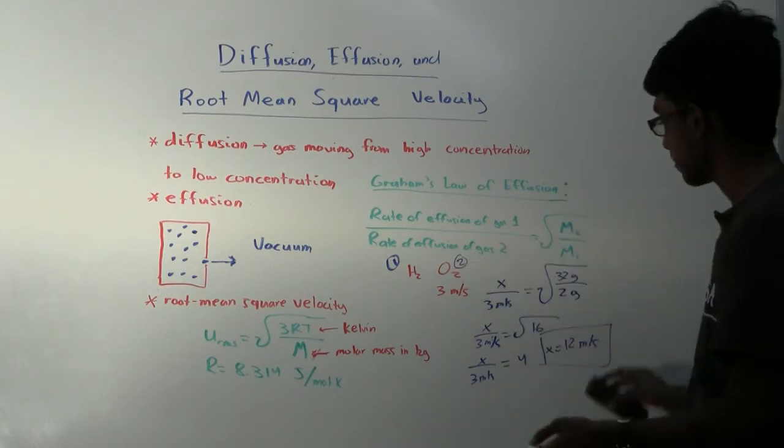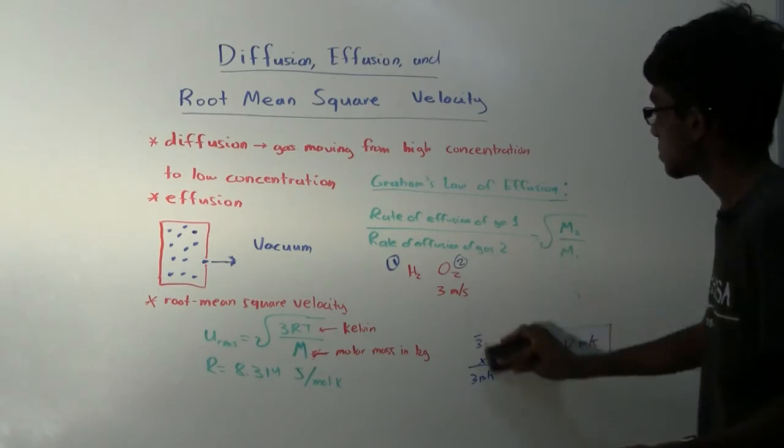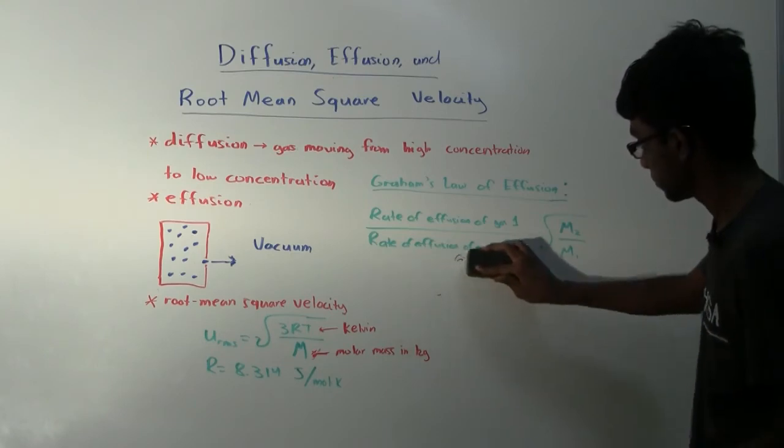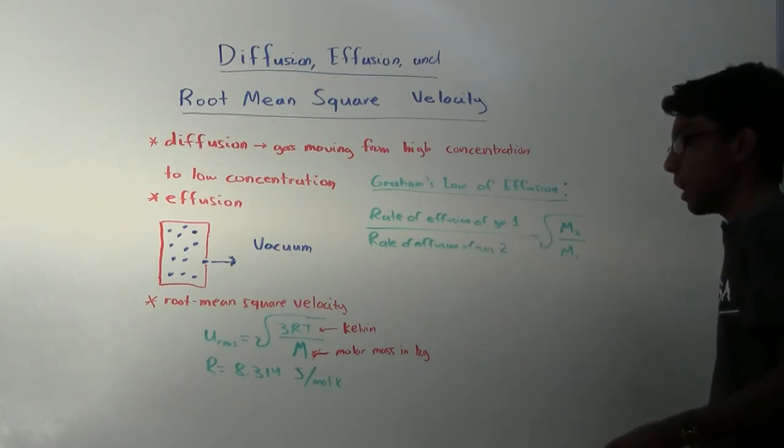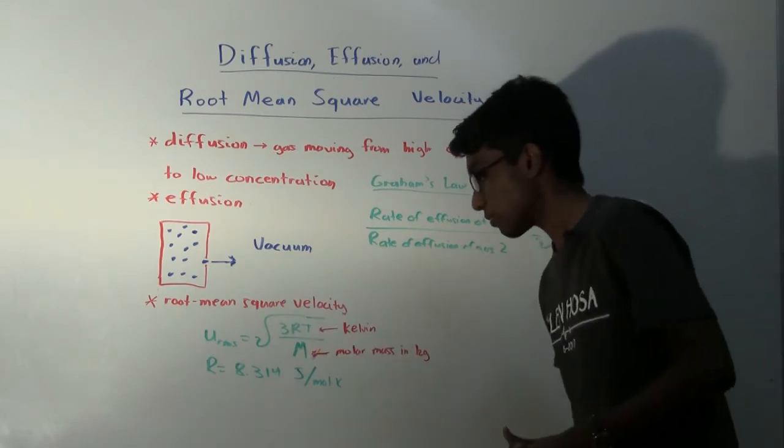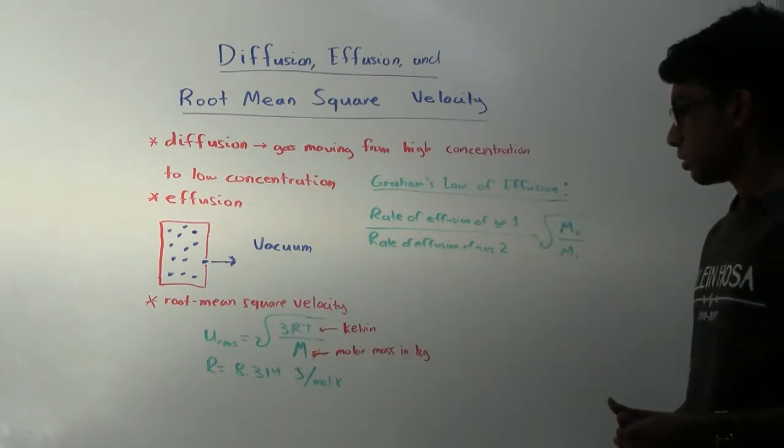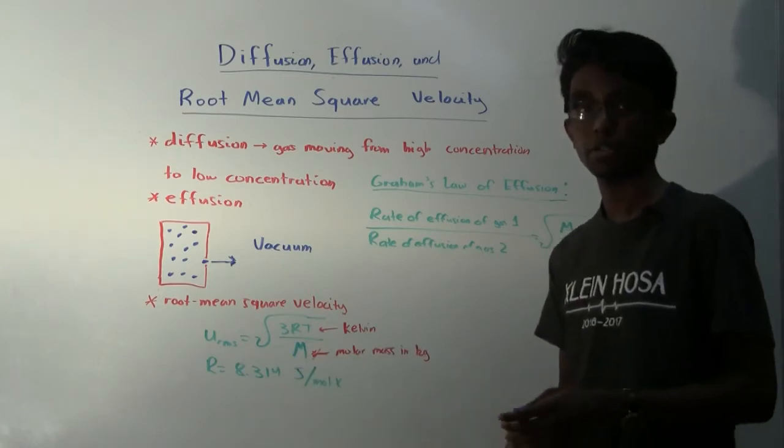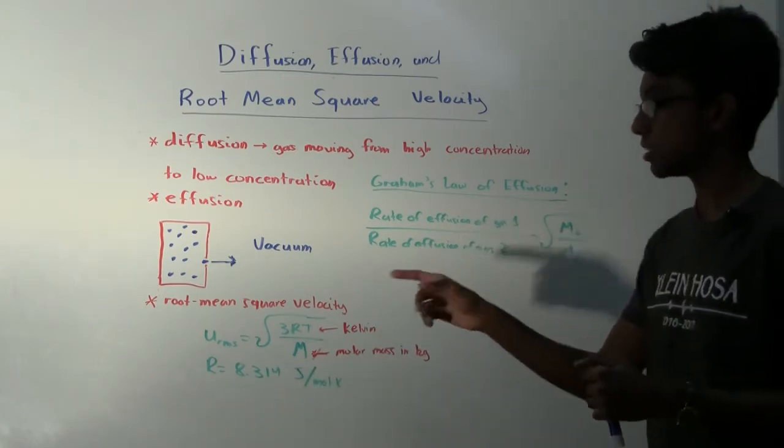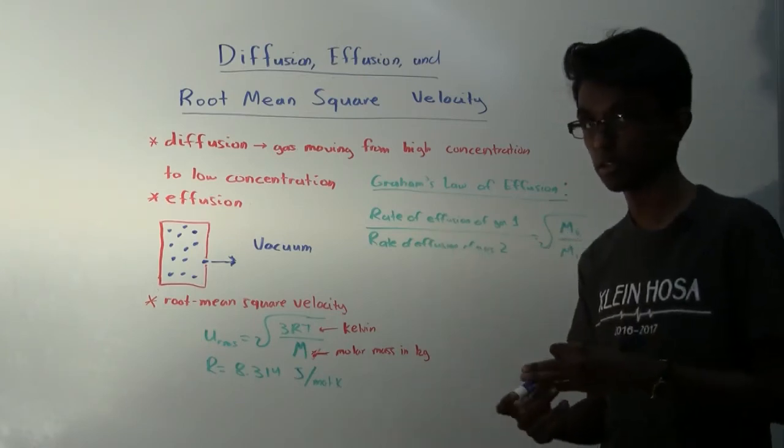So this should be 12 meters per second. That's how you use Graham's law of effusion. And then the last property we're going to be talking about, physical property, is root mean squared velocity. Root mean squared velocity is a way of measuring how fast each individual gas particle, the average velocity of each gas particle within a container.